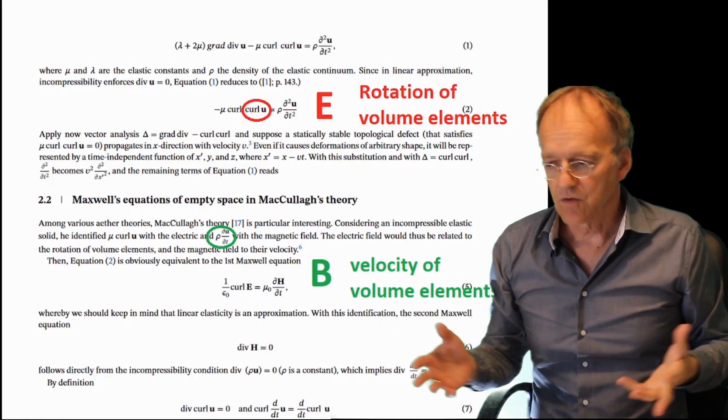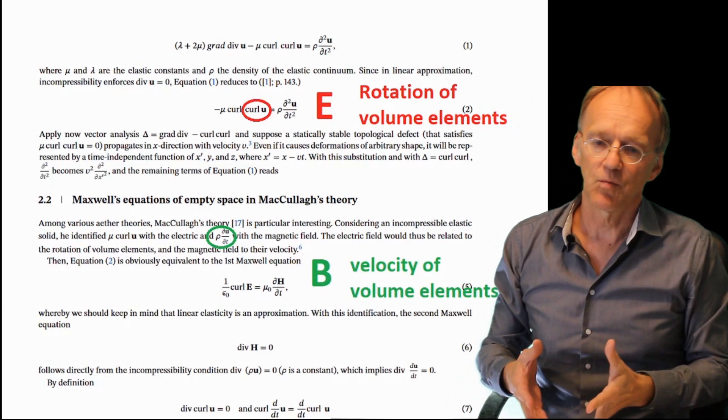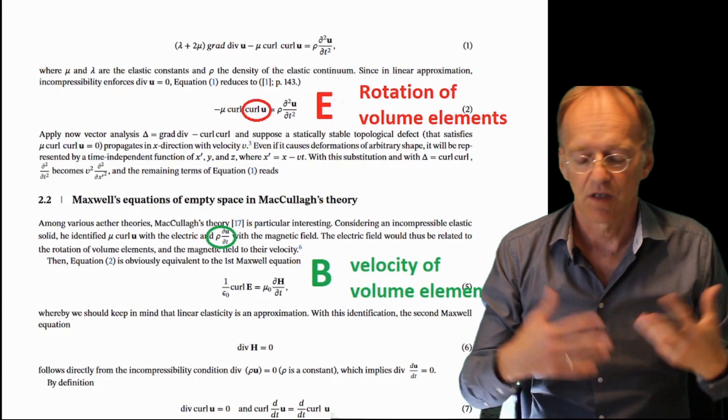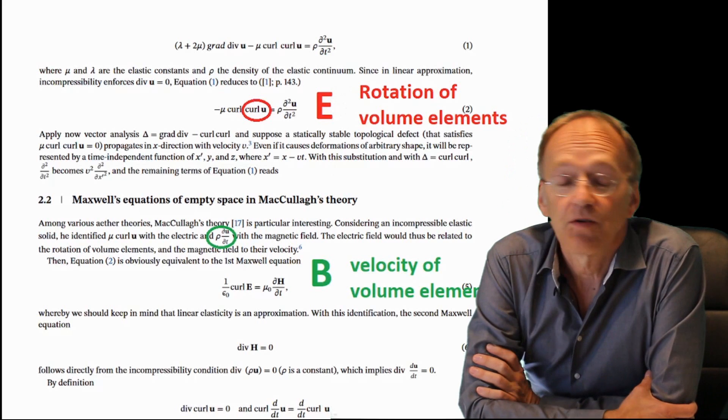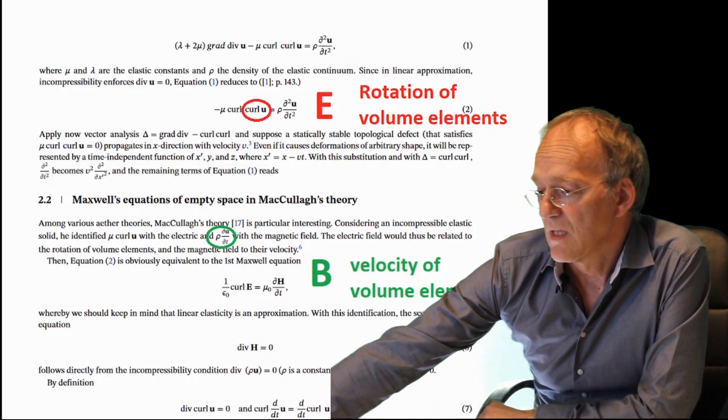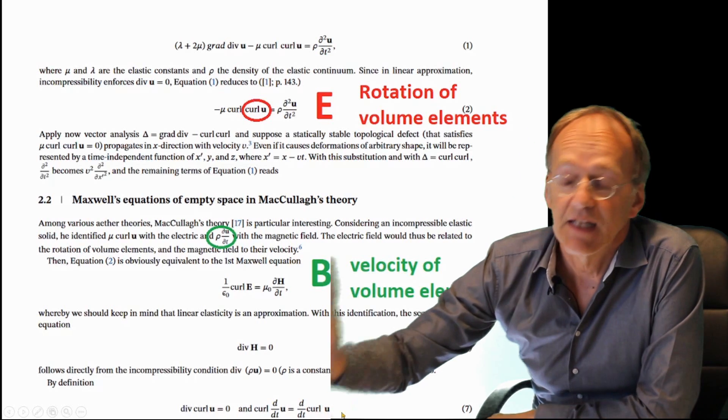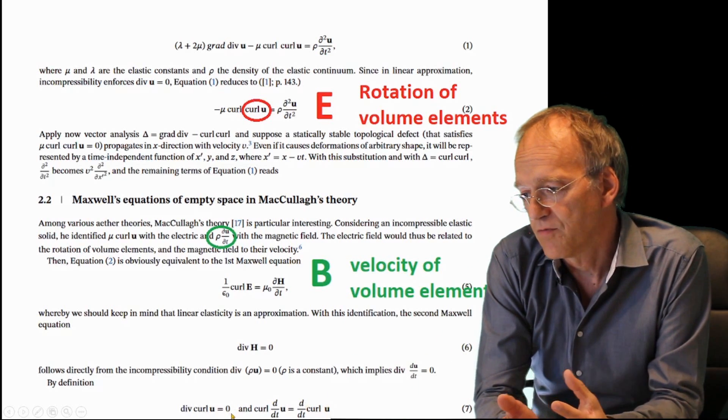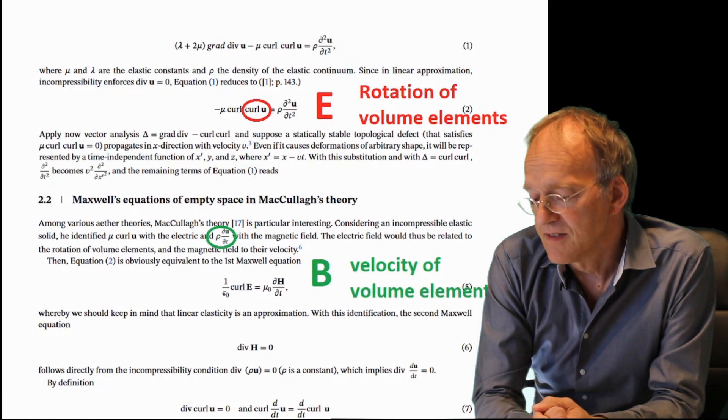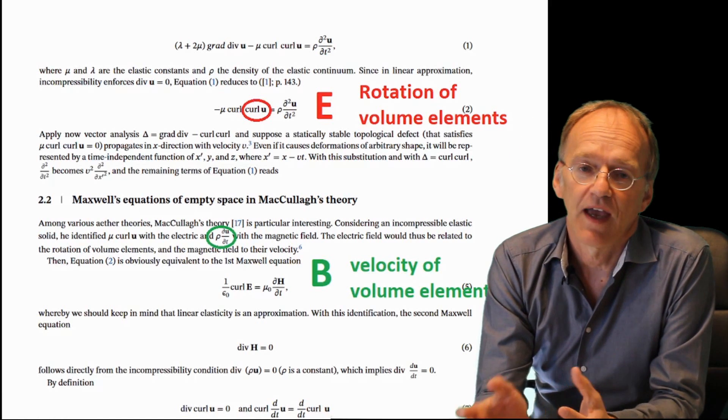This would be the first equation. Then of course you have the divergence of this velocity, by definition would vanish. So we have no problem with the Maxwell equation divergence of the magnetic field vanishing. And also very interestingly, you get the rest of Maxwell's equations in empty space if you just apply vector analysis.